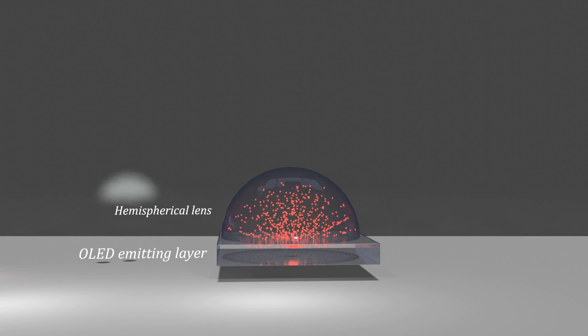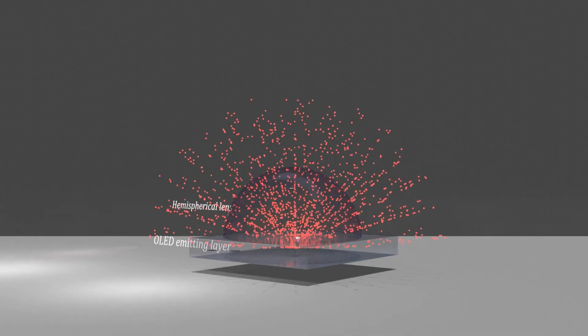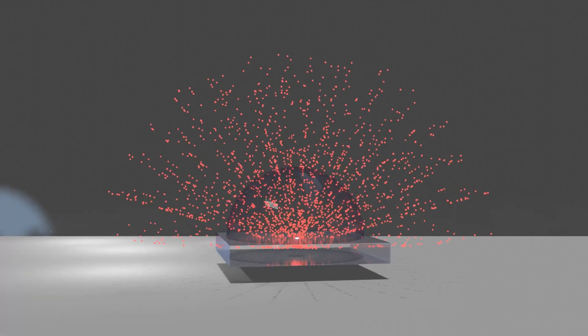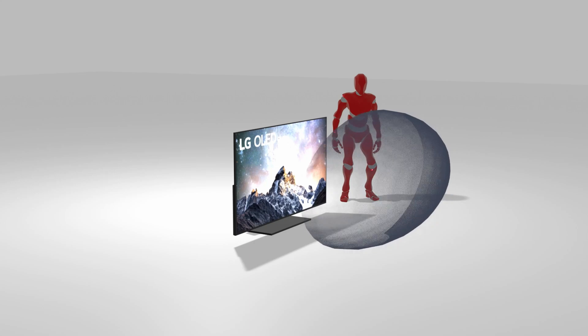When a hemispherical lens is placed on the device, the light generated from the device travels in all directions, but when it enters the air layer, it always travels in the direction perpendicular to the interface between the air and the light-emitting layer.